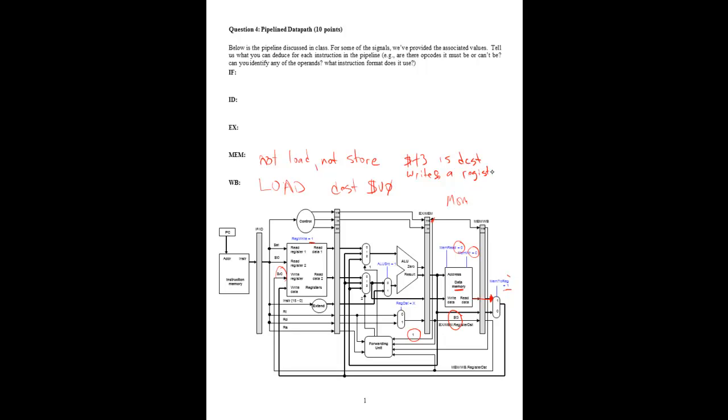That means it can't be a branch also, for example. It's some sort of arithmetic instruction. So maybe we'll include that here - it's not a branch. We don't know what kind of instruction it is precisely, but we know some stuff about what it isn't.